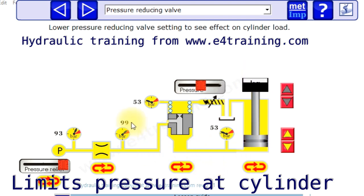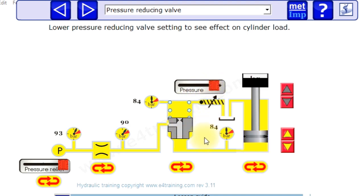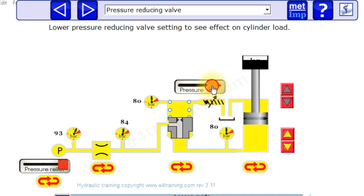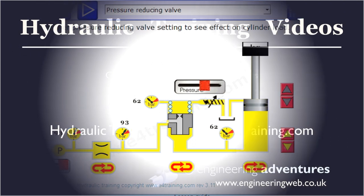So our load is starting to drop again. We've shut off the supply pressure and we've got a lower pressure on the output side of the reducing valve. That's basically what it does - it reduces the pressure. Wind it up again and we set our reducing pressure at 80 bar and we lift our load again. So that's quite simply in its basic form what a reducing valve does.